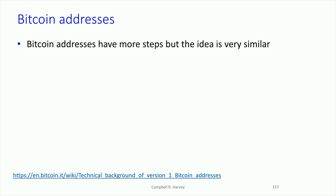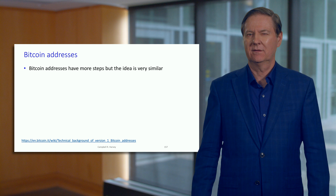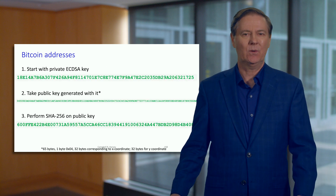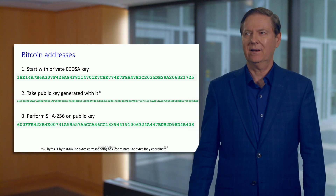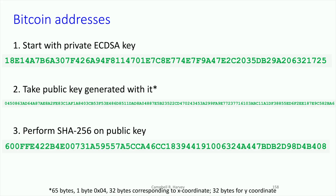Bitcoin is more convoluted but still fairly straightforward. This isn't a Bitcoin course, but given Bitcoin's importance I'll go through the same steps as an example. You generate a random number as your private key, pass it through the elliptic curve routine to get a public key — 512 characters. Then you perform a SHA-256 on the public key. This is identical to Ethereum except Ethereum uses KECCAK-256 whereas Bitcoin uses SHA-256.